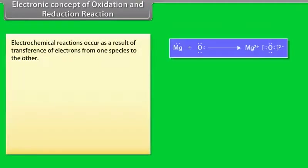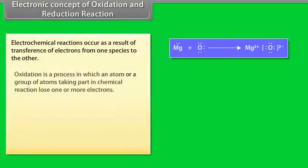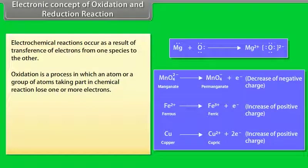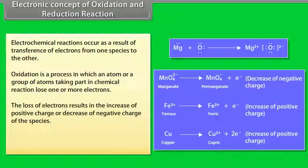Electronic concept of oxidation and reduction: Electrochemical reactions occur as a result of transference of electrons from one species to another. For example, if magnesium is burnt in oxygen, it gets oxidized to magnesium oxide. In the formation of magnesium oxide, two electrons from the magnesium atom are transferred to the oxygen atom. Oxidation is a process in which an atom or group of atoms loses one or more electrons, resulting in an increase of positive charge or decrease of negative charge of the species.